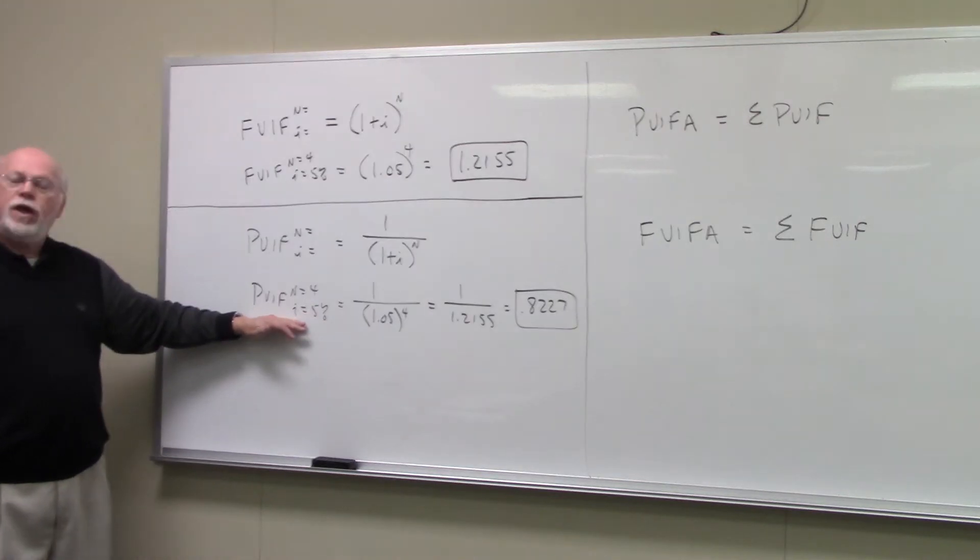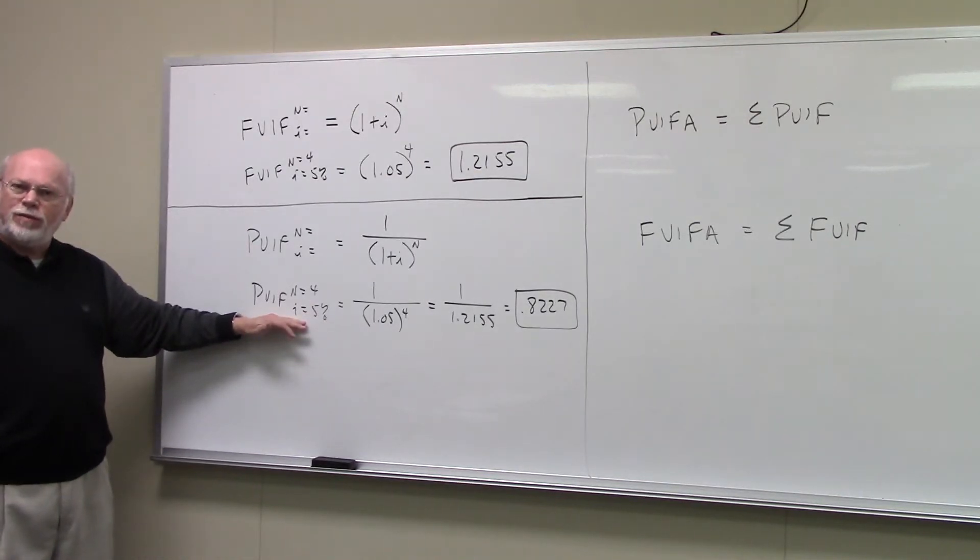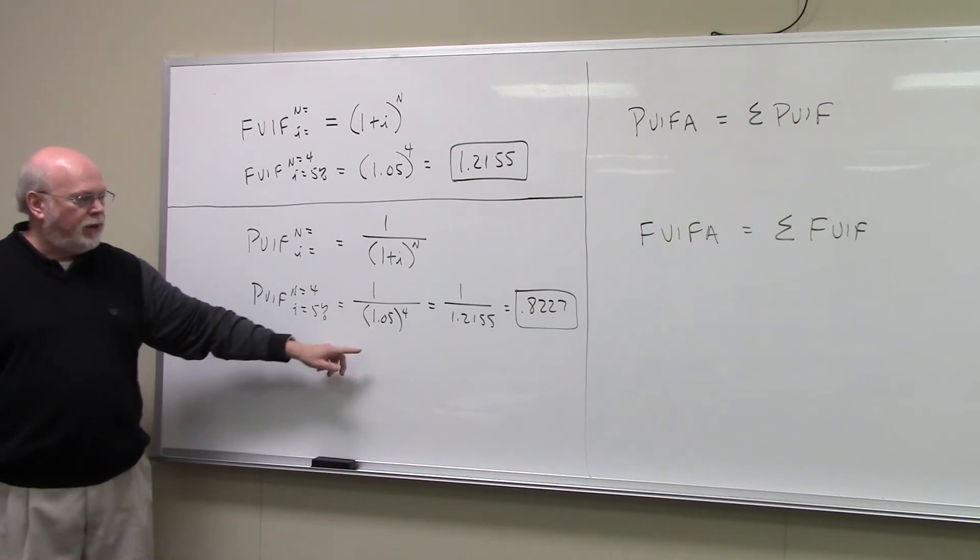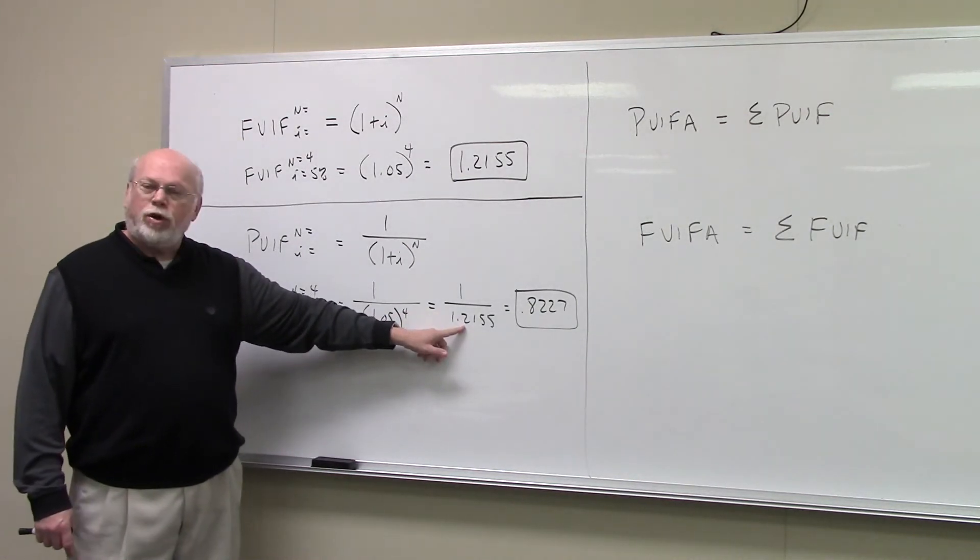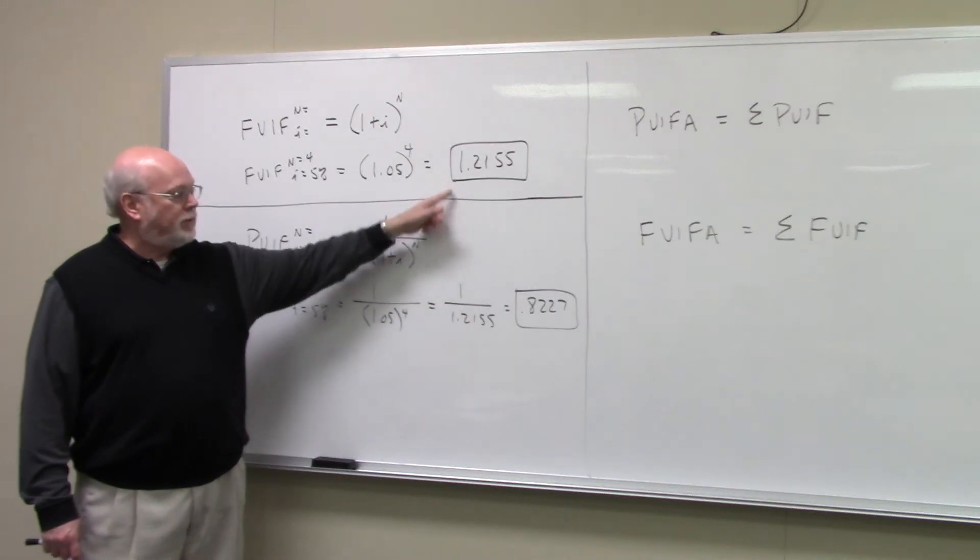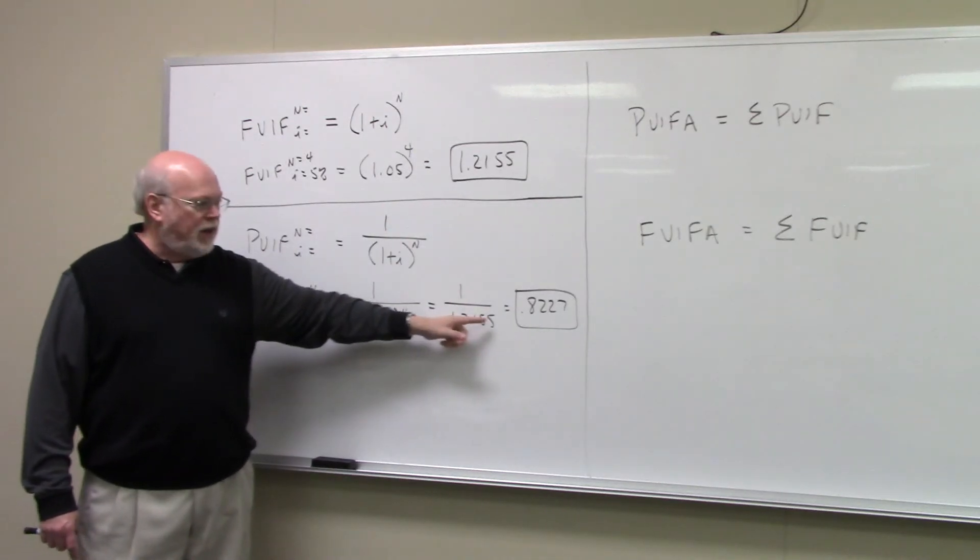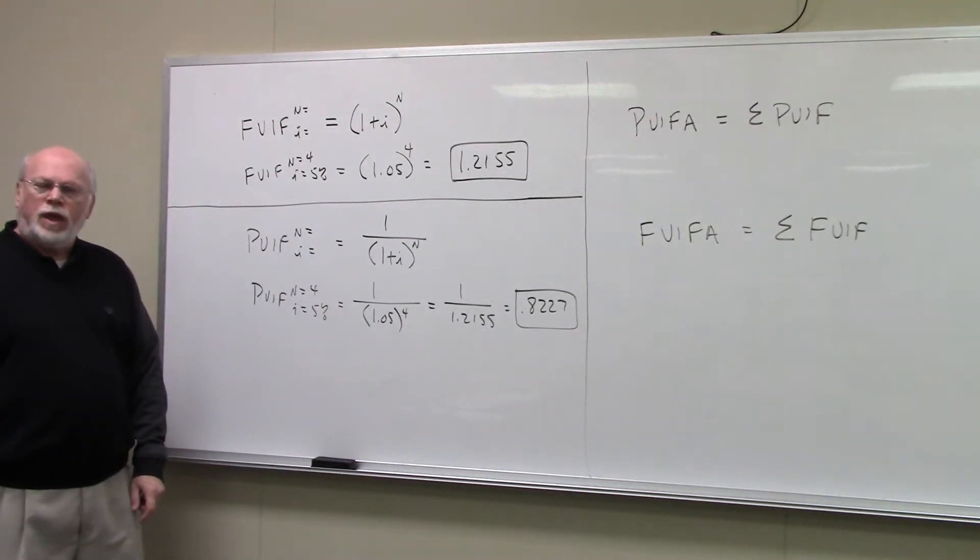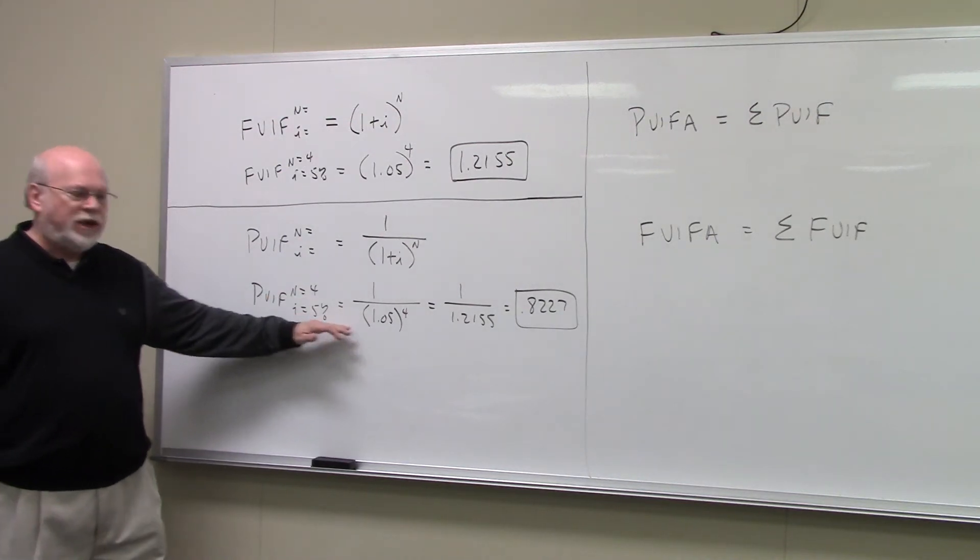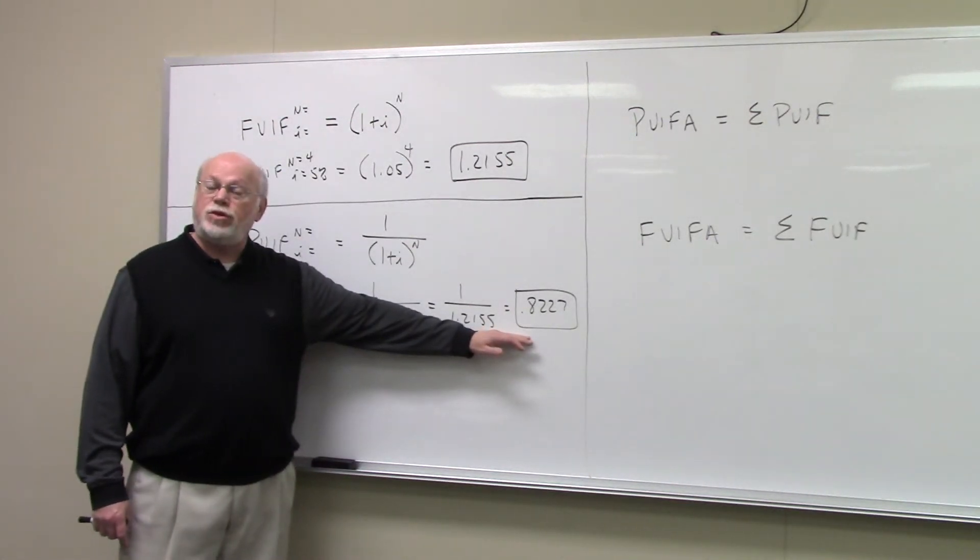For instance, your PVIF at 4 and 5%, if you calculated it yourself, would be 1 over 1 plus I raised to the N. 1.05 raised to the 4th power. 1.05 raised to the 4th power is 1.2155. 1 over that is .8227. If you look up your PVIF on your interest factor tables at 4 and 5%, you'll find .8227.